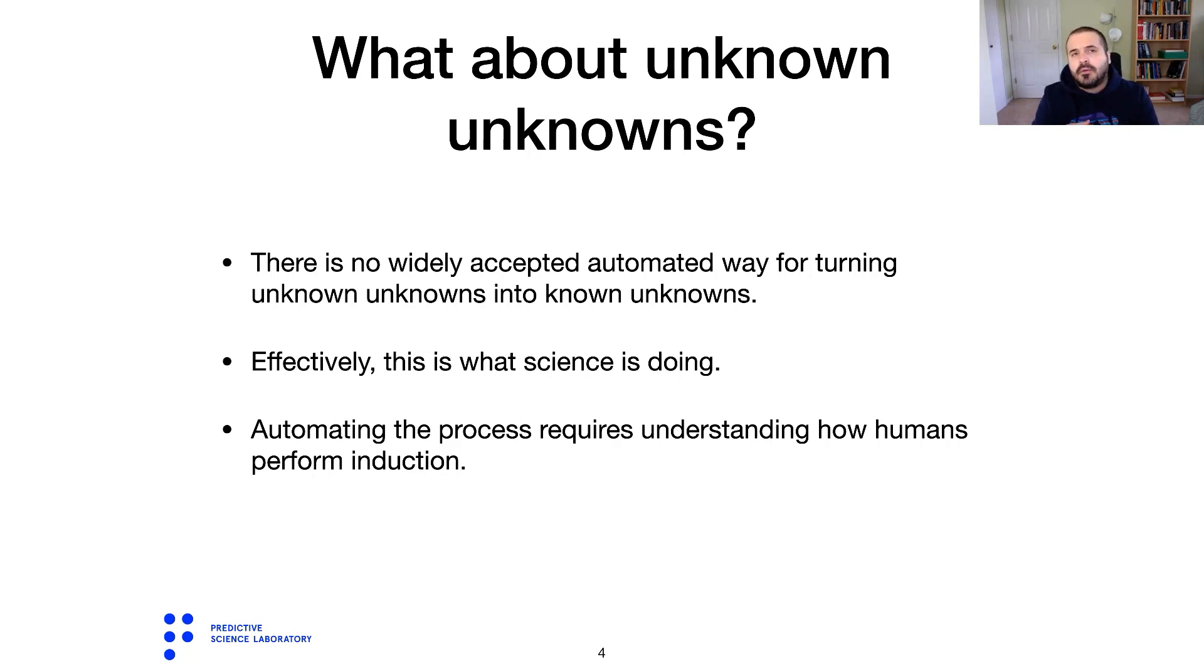Automating the process of dealing with unknown unknowns is essentially replicating how humans do science, and this requires general artificial intelligence - artificial intelligence that can think like human beings. This is something that we don't have right now, and this is something that we may be decades from, or even hundreds of years from, achieving.